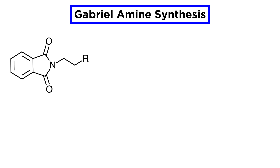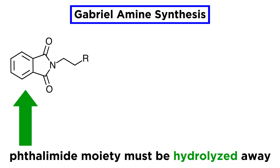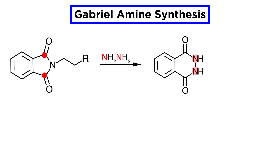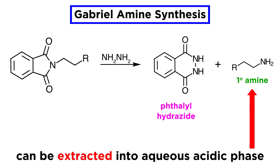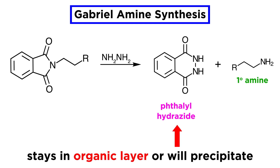Once the substitution process has taken place, the phthalimide moiety has to be hydrolyzed away. This can be done under very strongly acidic or basic conditions. However, if the amine has sensitive functionalities, it is best to carry out the deprotection under modified conditions using hydrazine as a nucleophile. These nitrogen atoms attack the two carbonyls, which will eventually push the nitrogen out of the ring to produce the amine. This process is milder and yields a phthalyl hydrazide along with the desired primary amine, the latter of which can be extracted into an aqueous acidic phase, whereas the hydrazide, being a neutral compound, stays in the organic layer or precipitates out and can be filtered off.